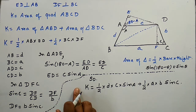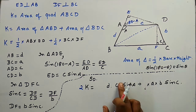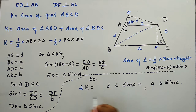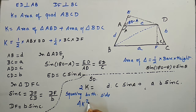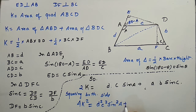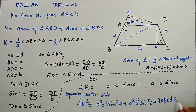Now sending the 2 to this side, 2K equals D·C·sin A plus A·B·sin C. Now if we square both sides, we will get 4K² equals D²C²·sin²A plus A²B²·sin²C plus twice of A·B·C·D·sin A·sin C.